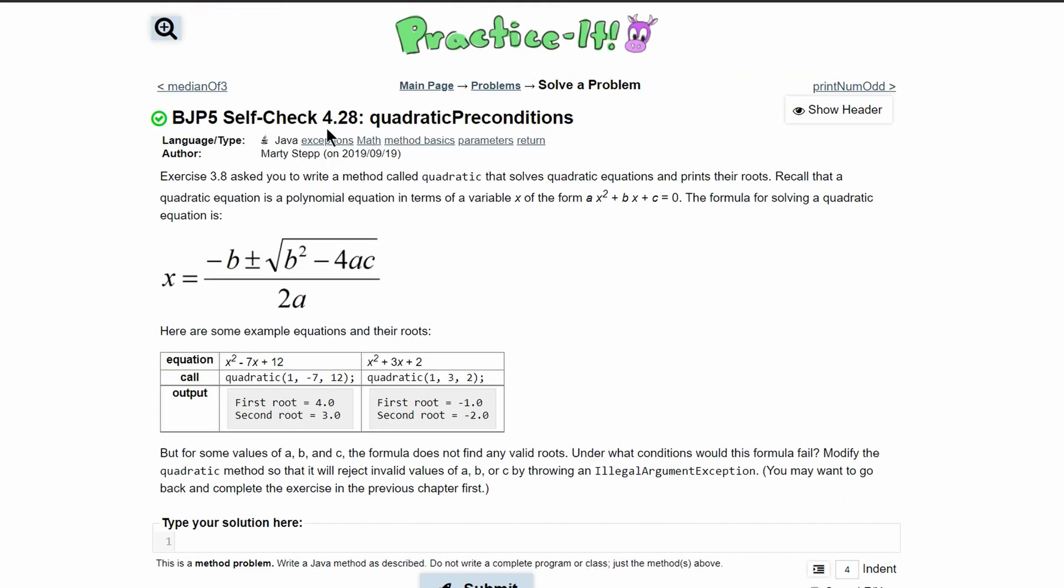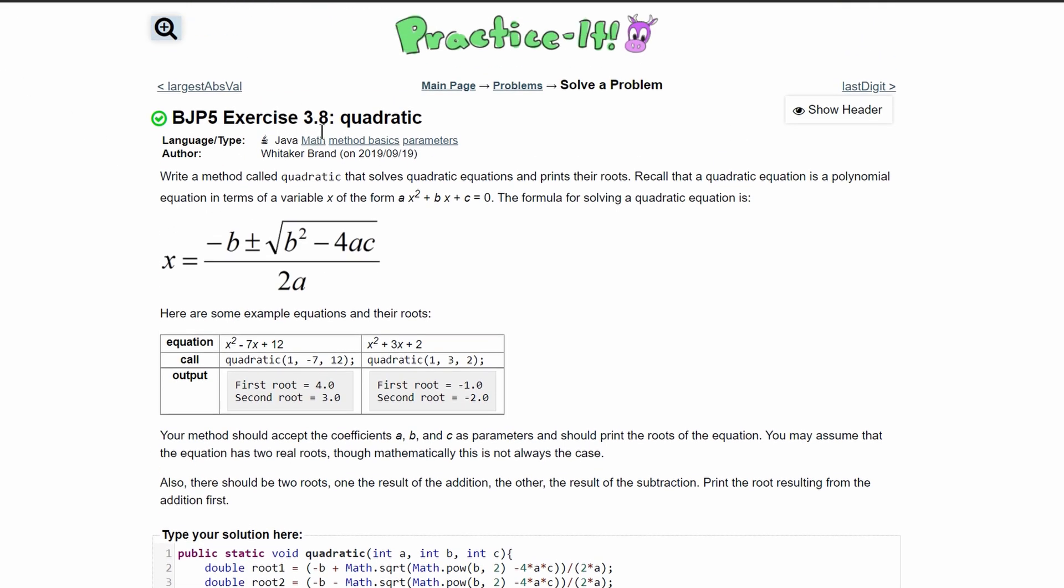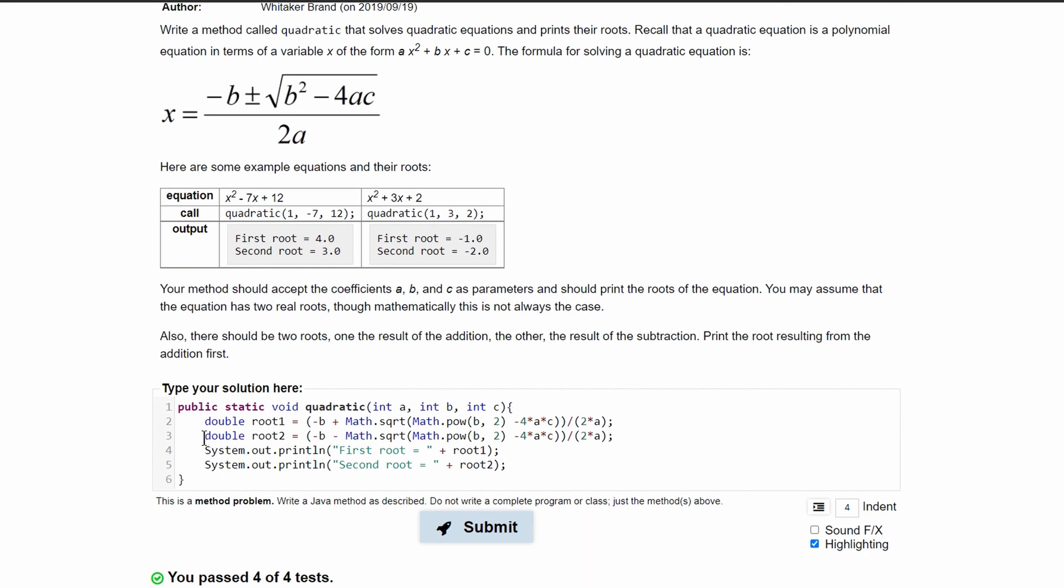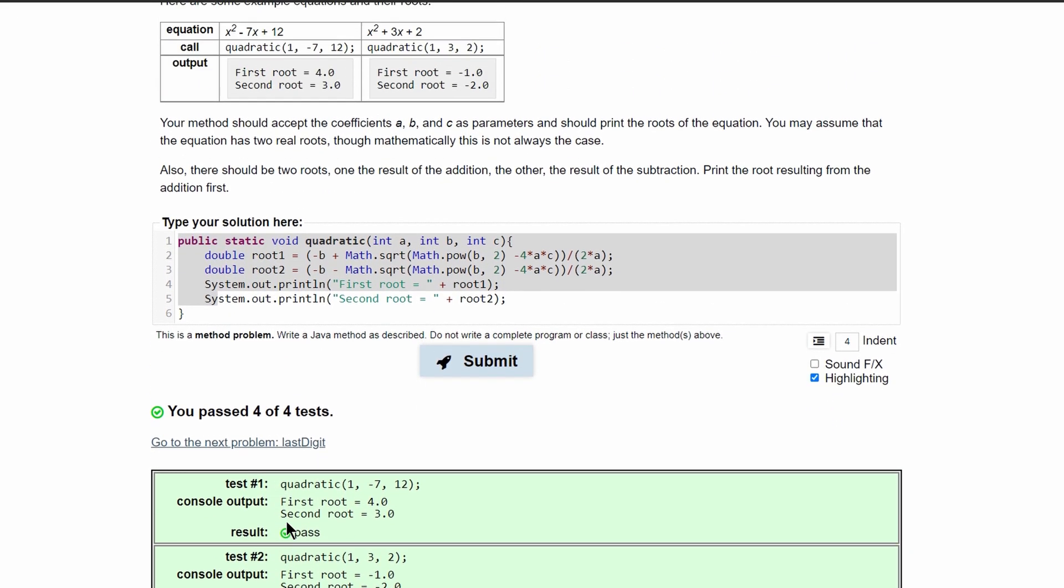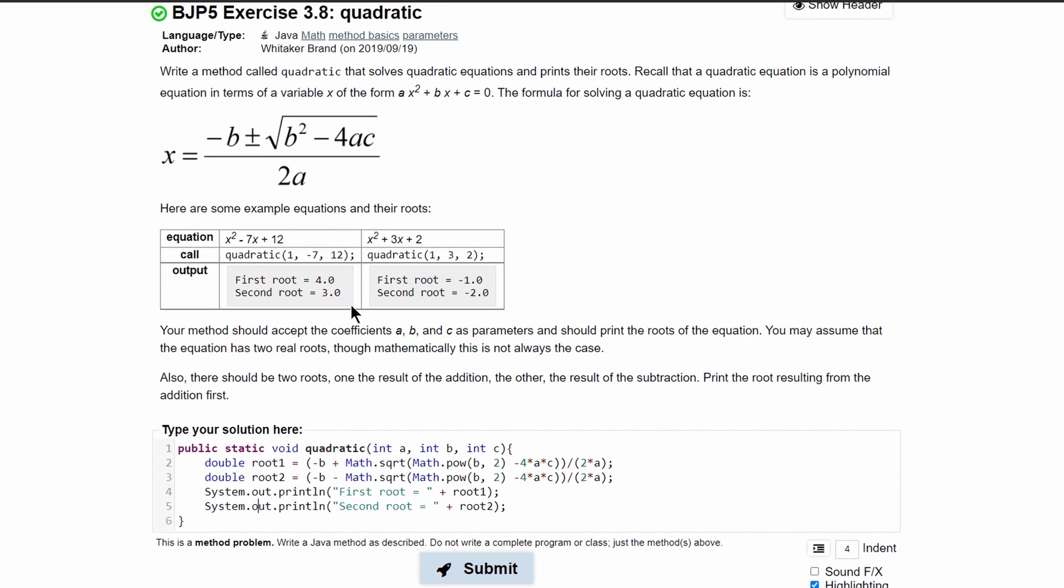This is self-check 4.28. If we go back to exercise 3.8 with practice it, link below, we have coded this already. It's already passed all the tests so this is the correct code that will give us this quadratic equation.